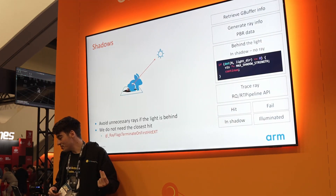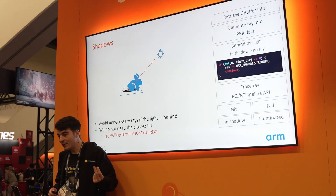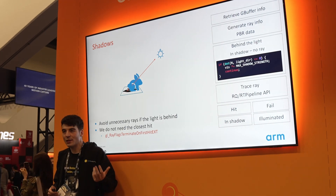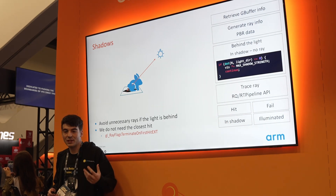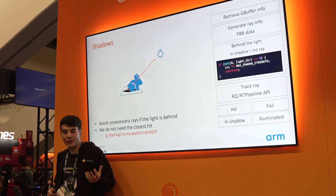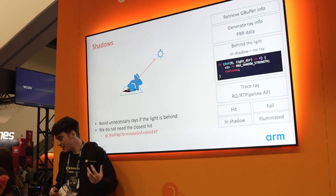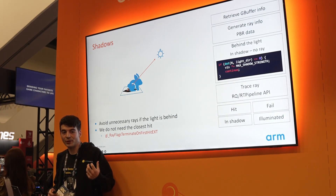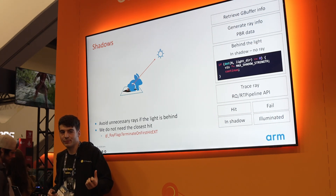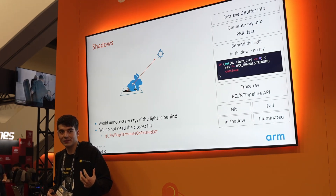Now I will speak about shadows. Shadows work very similarly in our demo to reflections — we sample from the G-buffer, generate shadow rays, and trace the ray. If we hit something, it means that we are in shadow; if the ray misses, it means we are illuminated. There are two important optimizations in our shadow pipeline. First, we can skip most ray traversal by just checking if we are facing the light, which is very easy to do with a dot product. Second, for reflections we need to find the closest hit; however, for ray-traced shadows we only need to know if we are intersecting anything — not which specific thing. We can use flags to stop the ray traversal at the first intersection, which can significantly increase performance.